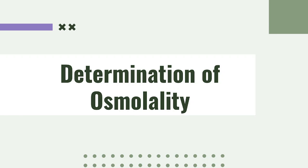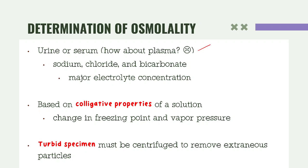For the determination of osmolality, serum is used rather than plasma — because plasma requires anticoagulants, which may introduce other osmotically active substances. When measuring osmolality, what is commonly measured are sodium, chloride, and bicarbonate, which are major electrolytes with high concentration. Osmolality is based on colligative properties, and the most commonly used is freezing point depression.